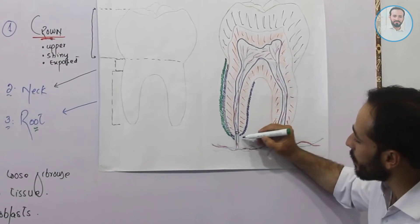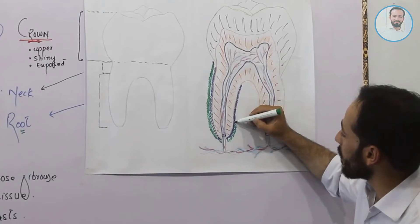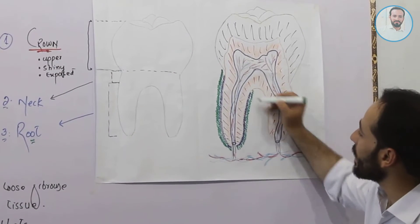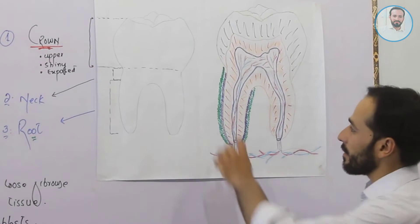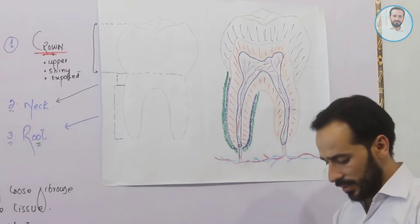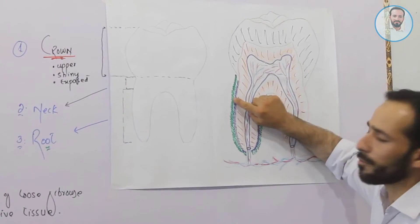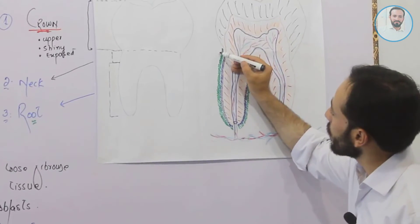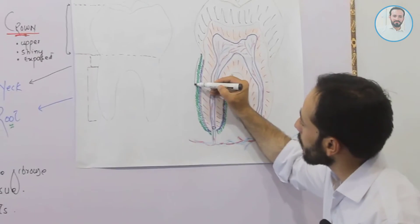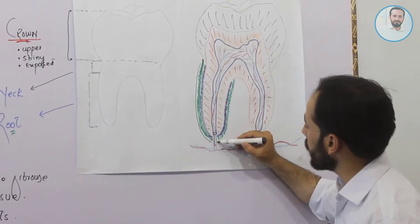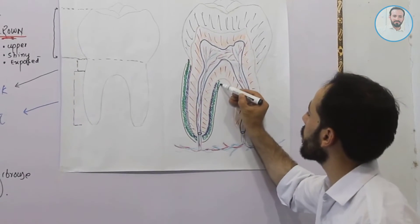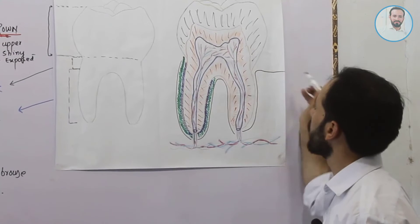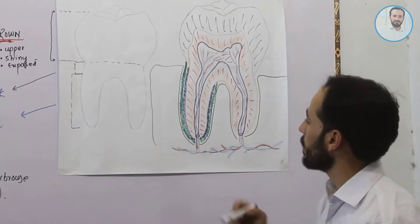The next and last part is the periodontal ligament. This ligament surrounds the root of the tooth. It is a type of dense regular fibrous connective tissue. The joint of the tooth with its socket is held by this ligament, which is called the periodontal ligament. The joint between this periodontal ligament and the teeth socket is called gomphosis.